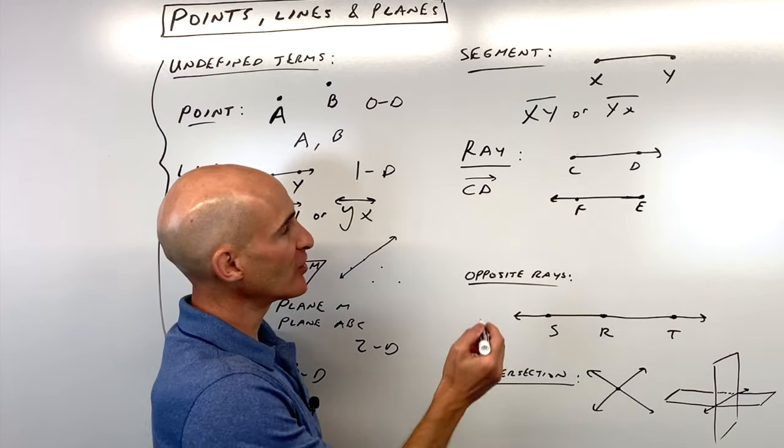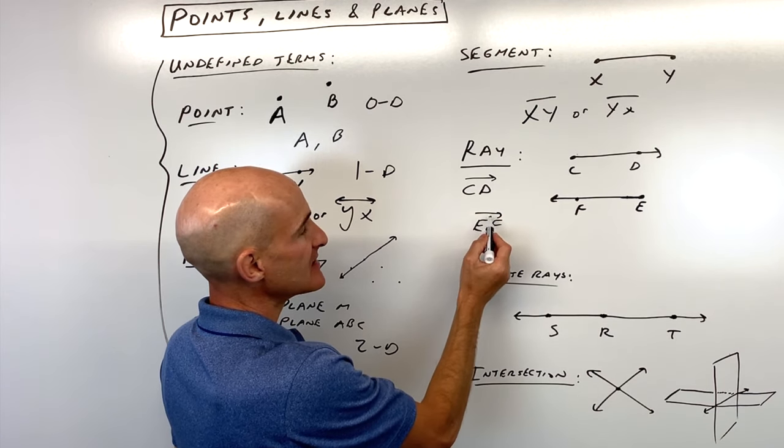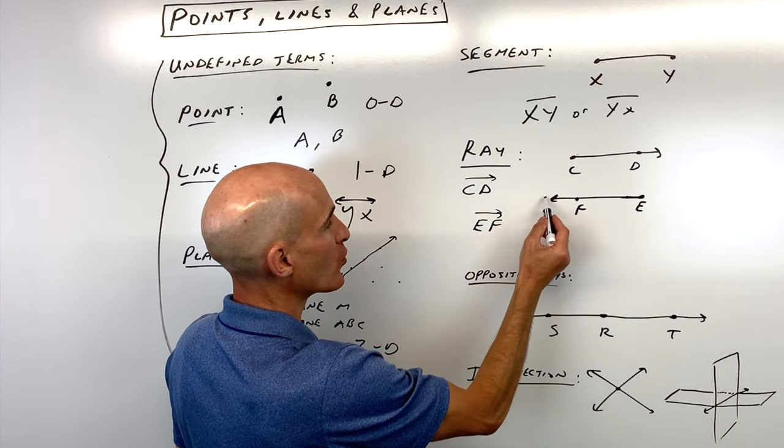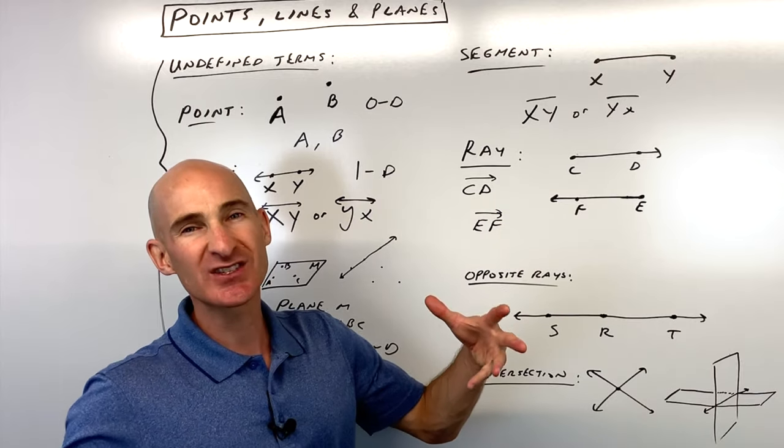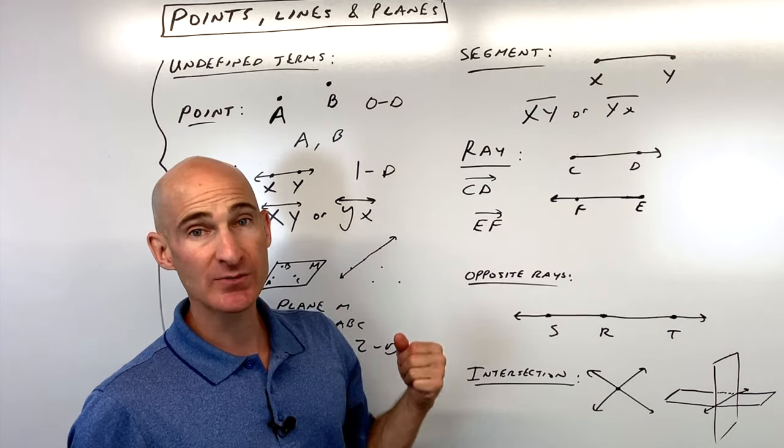So for example, with this ray here, notice how the ray is actually going to the left. Look at the way we're going to write this. We're going to write this as EF and see how the arrow is pointing towards F. It's starting at E, and it's going towards F and it keeps going. So that's ray EF. So that's just the convention that it's always drawn pointing to the right, even if the ray is pointing to the left.